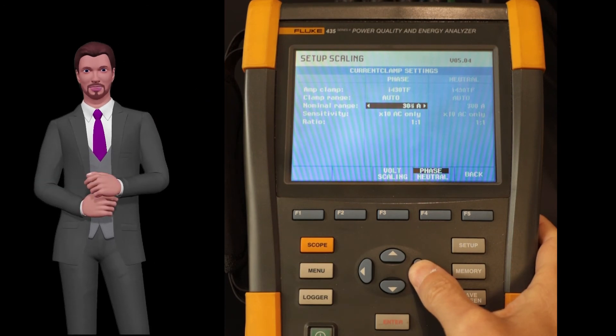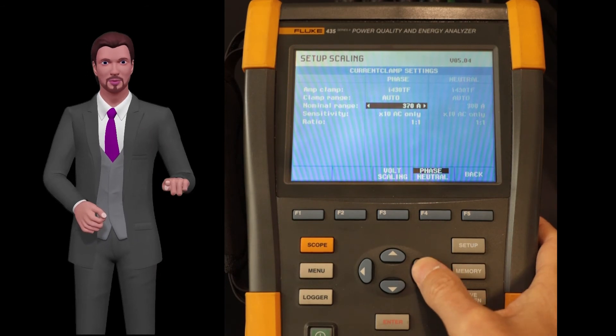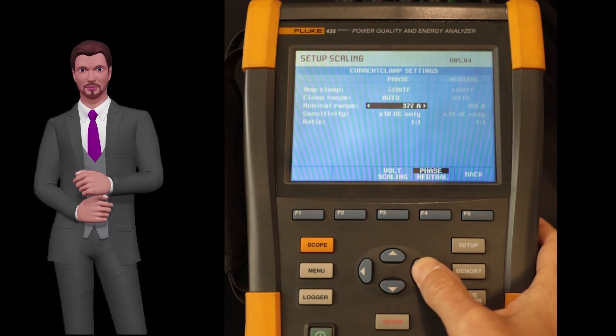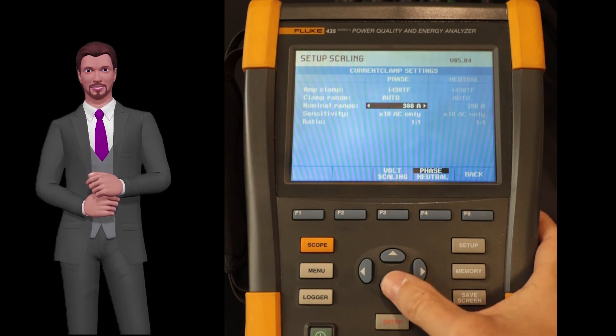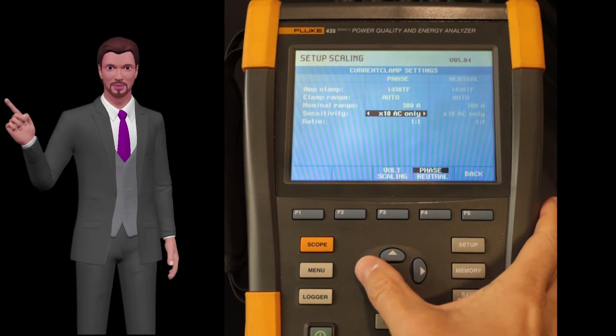This value is used to scale the graphs on the instrument display, so the logical thing is to choose a value slightly above the maximum value that we intend to measure. The next parameter, called sensitivity, is very important.